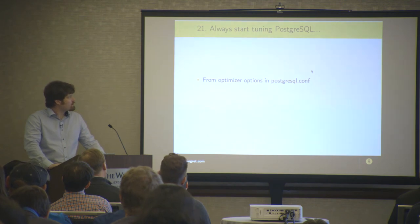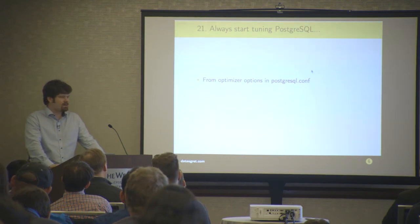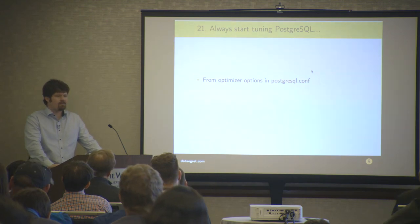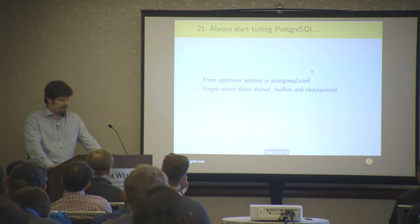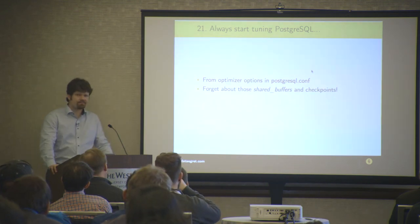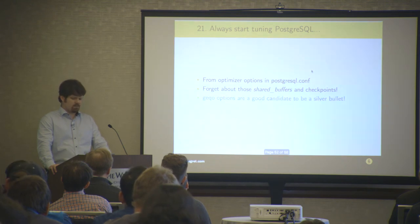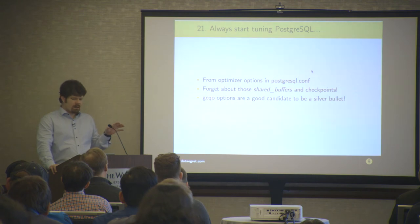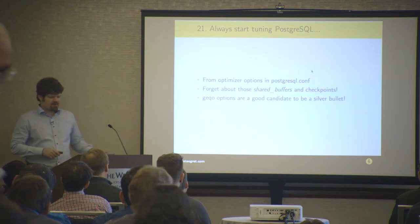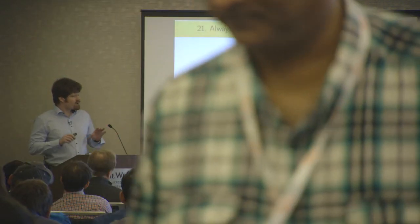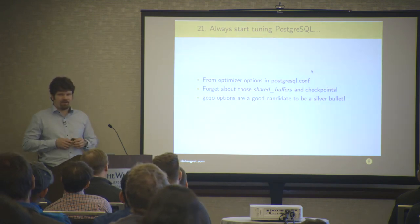Always start tuning Postgres from the optimizer options in postgres.conf. I've seen many times that Postgres is misconfigured badly and people try to find a big red button or silver bullet to tune things, and forget almost entirely about shared_buffers, checkpoint settings, the number of connections, and so on. You just need to start with something really helpful. The genetic query optimizer is a good candidate to be a silver bullet — if you change a couple of those parameters, everything will be good. Just forget about shared_buffers and checkpoints. Try to change something in the configuration that looks complicated. At least you can spend lots of hours doing that.